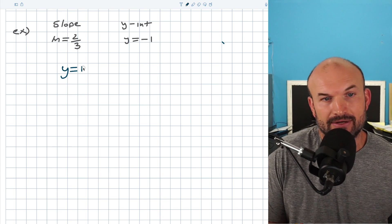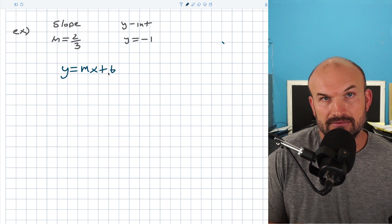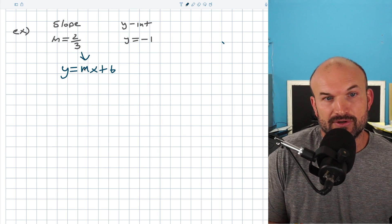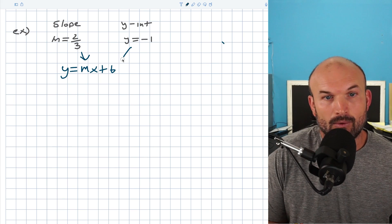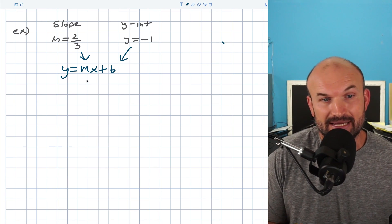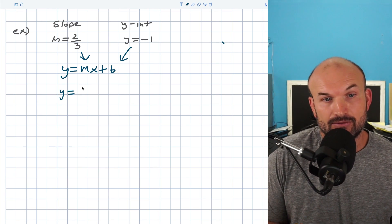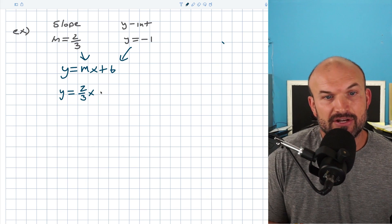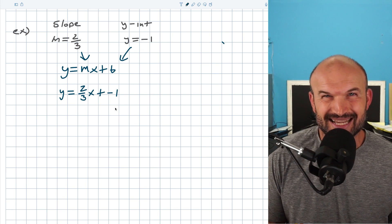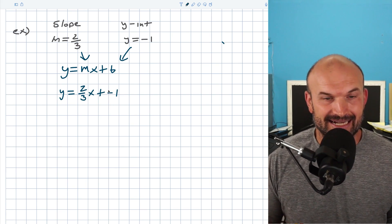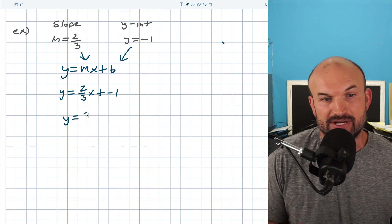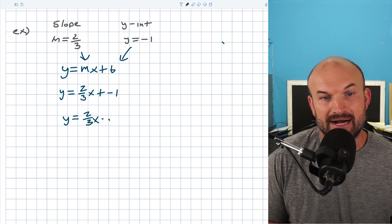So I'll take the equation y equals mx plus b, and then I'm going to take the two-thirds in for m because that represents the slope, and my y equals negative one, that's going to represent the b. So I can rewrite this as y equals two-thirds x. And then you could write this as plus a negative one, but that's kind of awkward, right? When you're adding a negative, that's really the same thing as subtracting. So therefore, I can give a final equation of two-thirds x minus one.